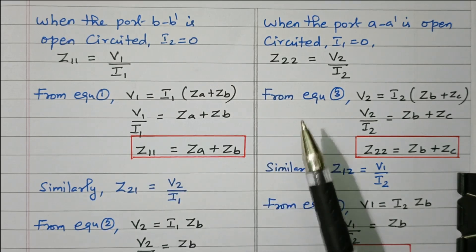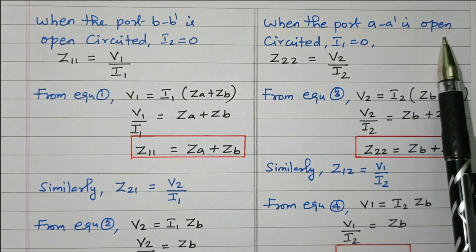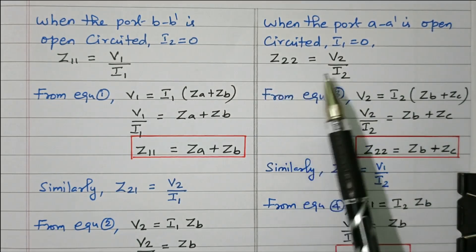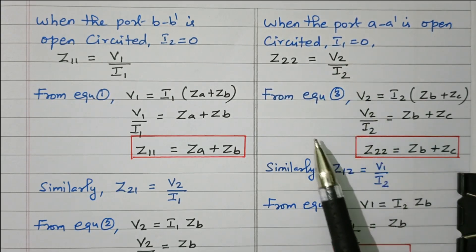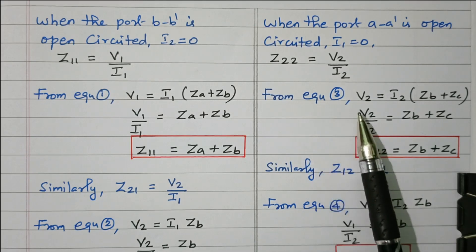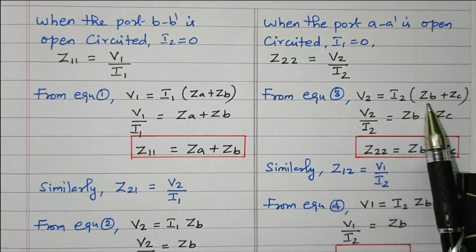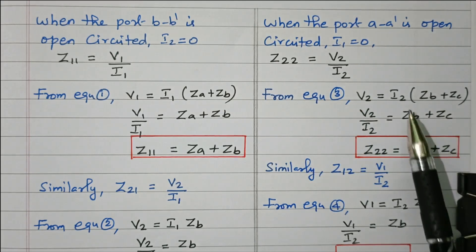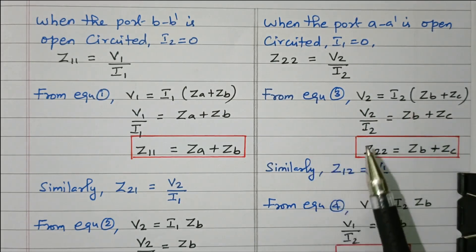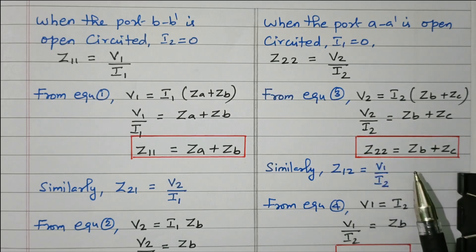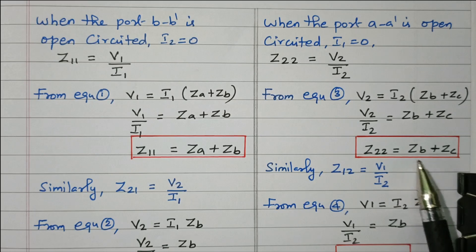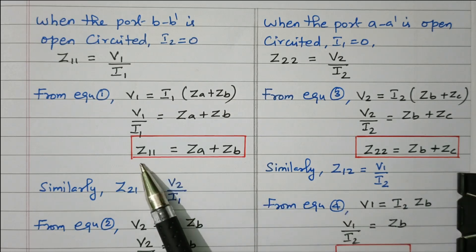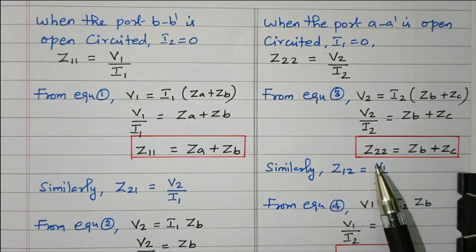Similarly, when port AA dash is open circuited, I1 = 0, so Z22 = V2 / I2, which is output voltage divided by output current. From equation 3, V2 = I2(ZB + ZC), so V2/I2 = ZB + ZC. Therefore Z22 = ZB + ZC, which is the open circuit output impedance. So Z11 and Z22 are both calculated.